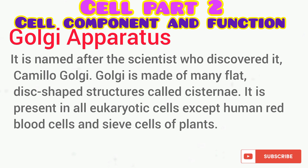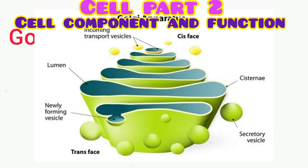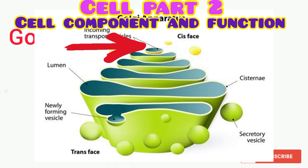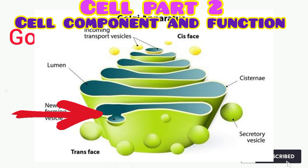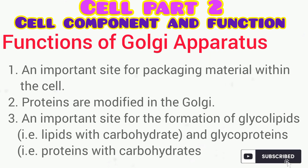Let's talk about the Golgi apparatus as the next component of the cell. The Golgi apparatus is named after the scientist who discovered it, Camillo Golgi, and is made up of many flat disc-shaped structures called cisternae. As you can see from the diagram, it is divided into the cis-face and the trans-face. The cis-face, regarded as the forming phase, is close to the plasma membrane and receives secreted material in vesicles, while the trans-face, regarded as the maturing phase, is close to the nucleus and releases secreted material into the cell. Its functions include packaging materials within the cell, modifying proteins, and serving as an important site for the formation of glycolipids and other substances.